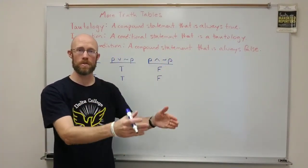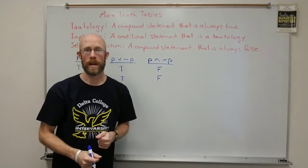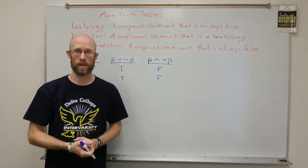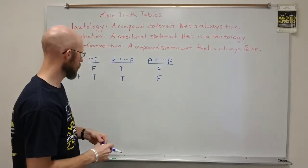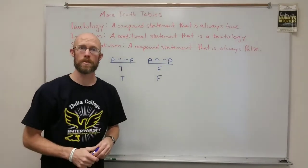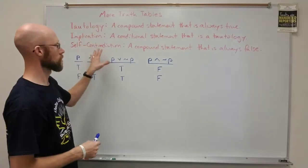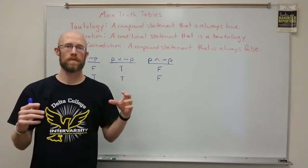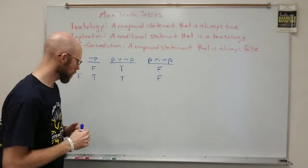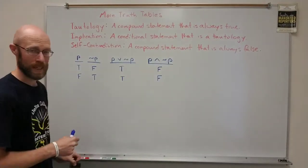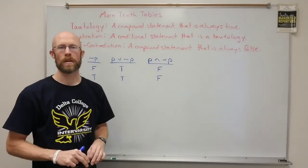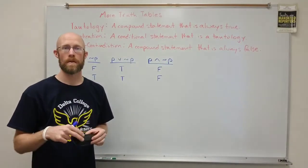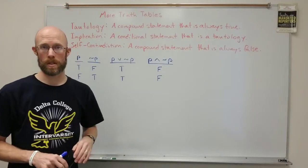Anything that is false in the entire column is a self-contradiction, and anything that is true in the entire column is an example of a tautology. So let's look at a couple more examples — not necessarily tautologies and self-contradictions, but anything. We'll develop a few more complicated conditionals and we'll see if maybe they do fall into one of these categories.